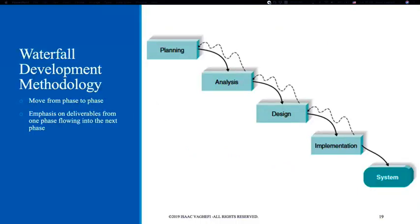Waterfall development is very sequential — planning phase leads to analysis, leads to design, followed by implementation, and then the system is delivered. Every step has to be done thoroughly and in a precise manner. In large projects, the outcome of each stage usually has to be approved by a steering committee, who will give a go decision at the end of each stage.